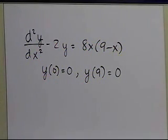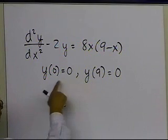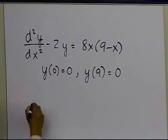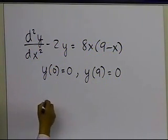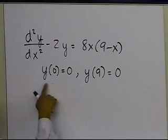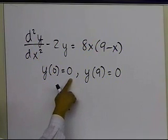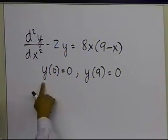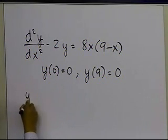But since we are solving this problem by using shooting method, we cannot use the boundary conditions to solve the problem. We have to use initial conditions, and since we need two initial conditions because of the second order differential equation, we have one initial condition at x equal to 0, but we don't have the other initial condition on the slope of y.